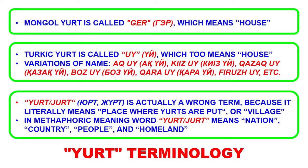There are variations of this name such as Ak-Yi, Kyiz-Yi, Kazak-Yi, Boz-Yi, Kara-Yi, and so on — they all mean different types of Yi, which is what we refer to as 'yurt,' and that's unfortunate. The word 'yurt' itself, or as we say in Kazakh 'zhurt,' is actually the wrong term because it literally means the place where you put the yurt — a location for the yurt, not the yurt itself. It could also mean a village full of yurts. But the yurt itself is called Yi.